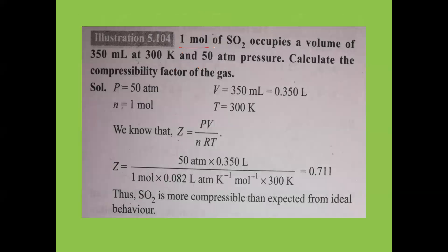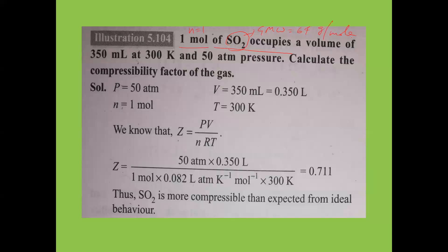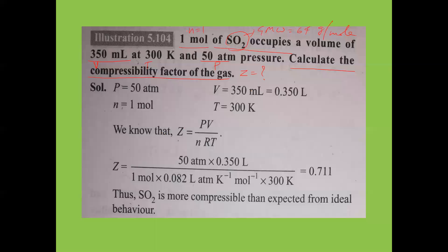Next problem: one mole of SO2 (gram molecular weight 64 g/mol) occupies a volume of 350 mL (convert to liters: 350/1000). Temperature is 300 K at 50 atm pressure. We are asked to calculate the compressibility factor Z of the gas.